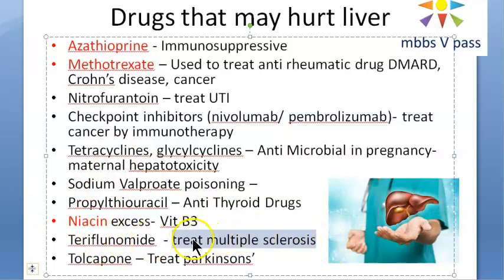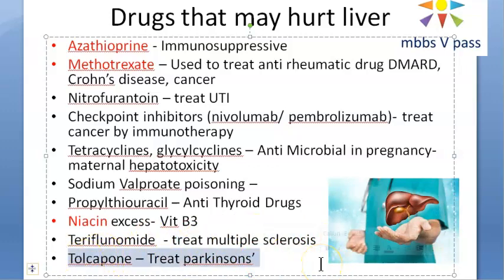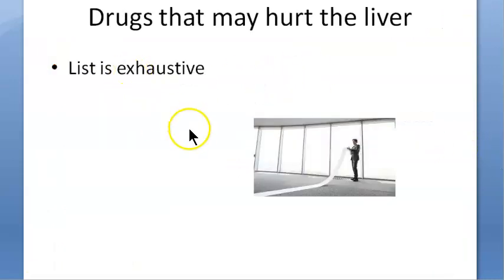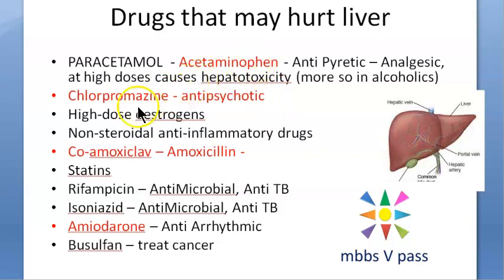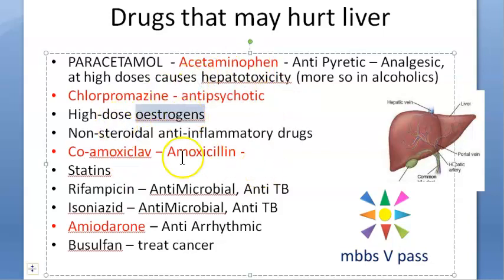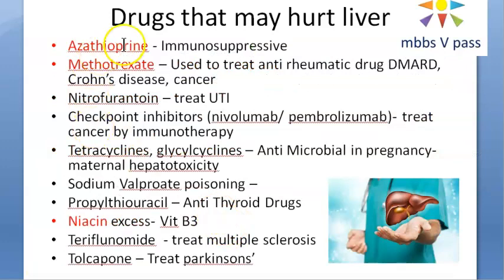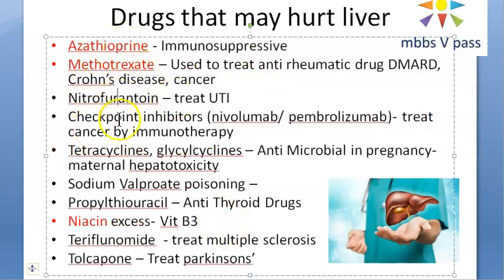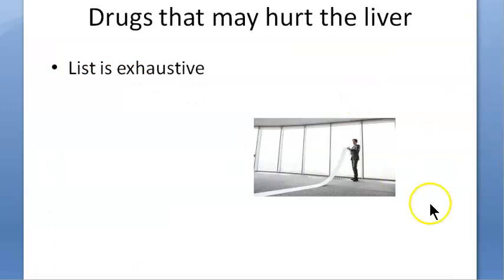Teriflunomide is used to treat multiple sclerosis, and tolcapone is used to treat Parkinson's — though not as a first-line drug. Both can be hepatotoxic. To summarize the full list: acetaminophen, chlorpromazine, estrogen, NSAIDs, amoxicillin, statins, rifampicin, isoniazid, amiodarone, busulfan, azathioprine, methotrexate, nitrofurantoin, cancer drugs, tetracycline, sodium valproate, propylthiouracil, niacin excess, teriflunomide, tolcapone.